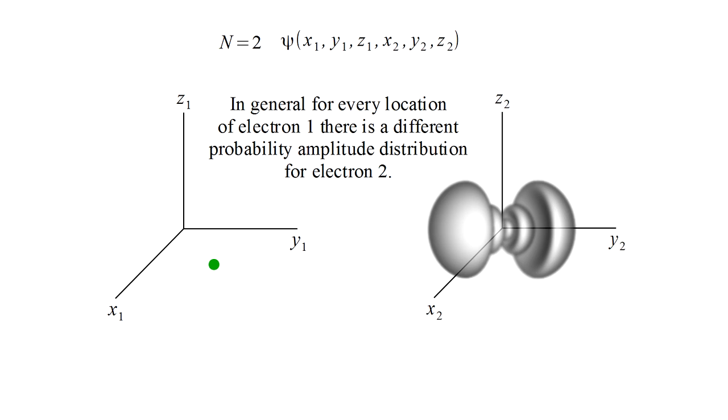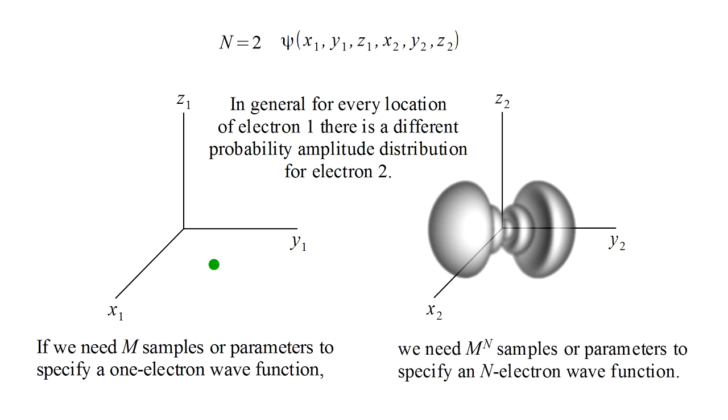This is much more complicated than simply finding a wave function for each electron. If we need m samples or parameters to specify a one electron wave function, then, in general, we need m to the n samples or parameters to specify an n electron wave function. The complexity of the wave function grows exponentially with the number of electrons.